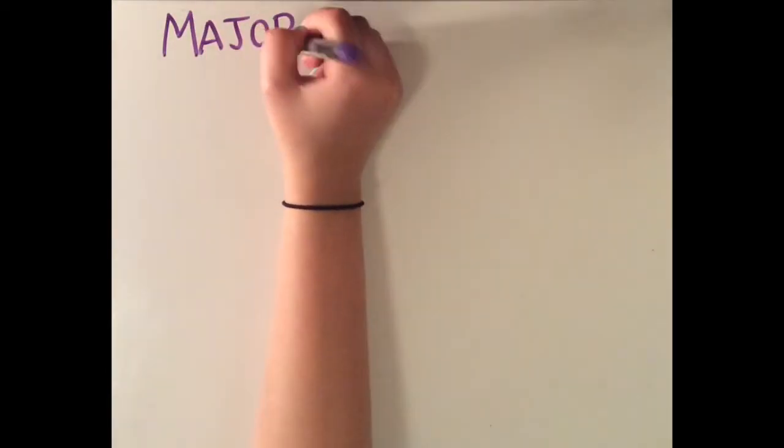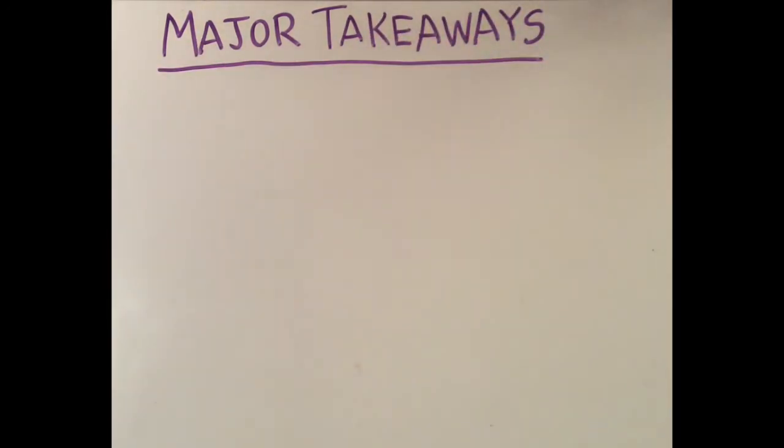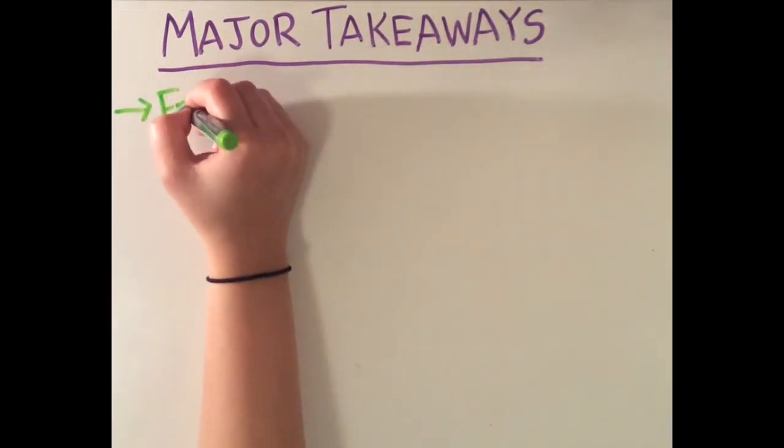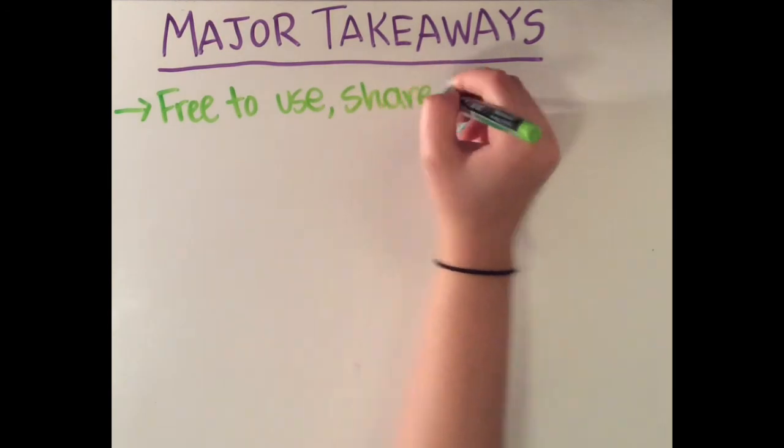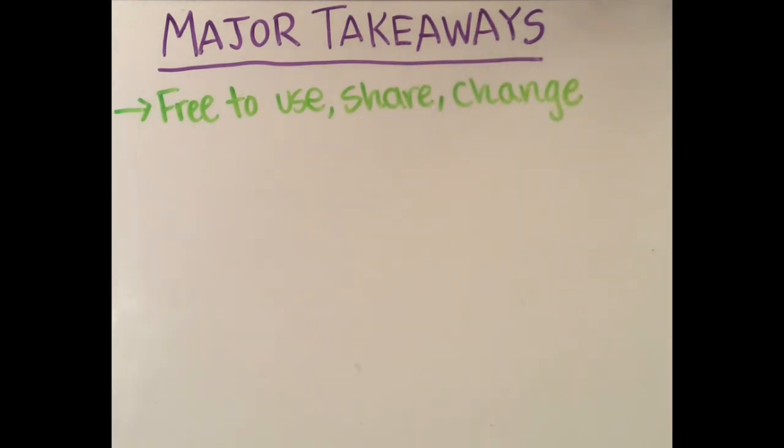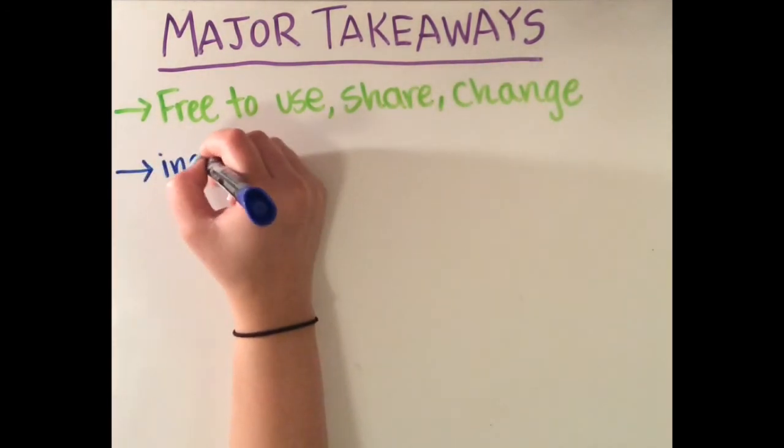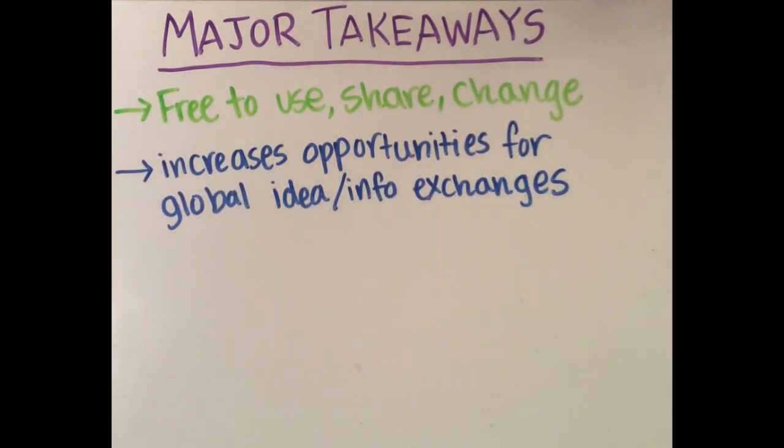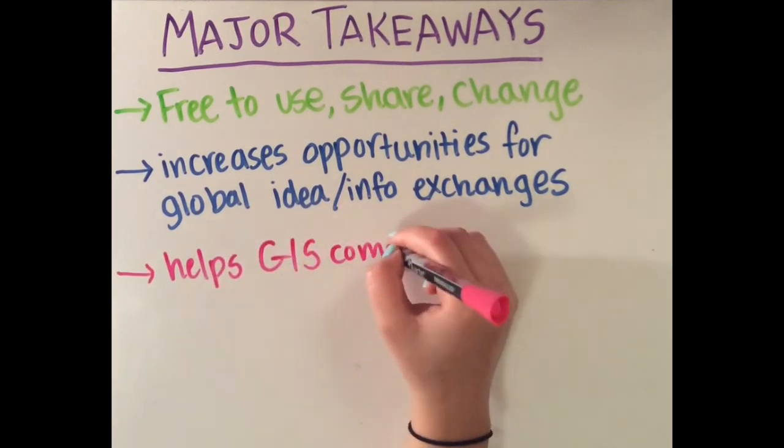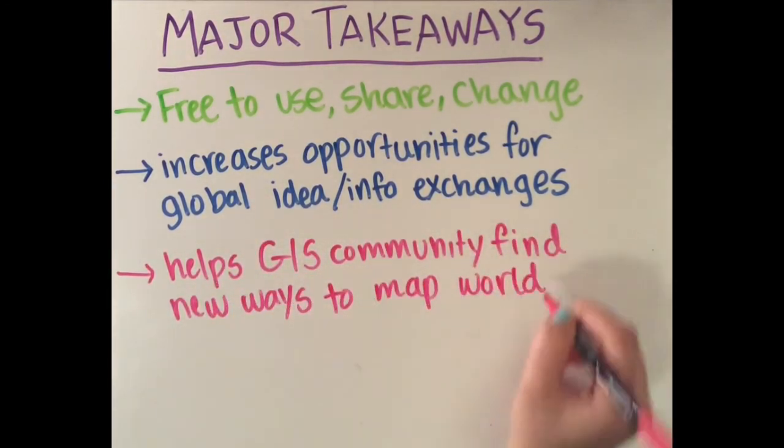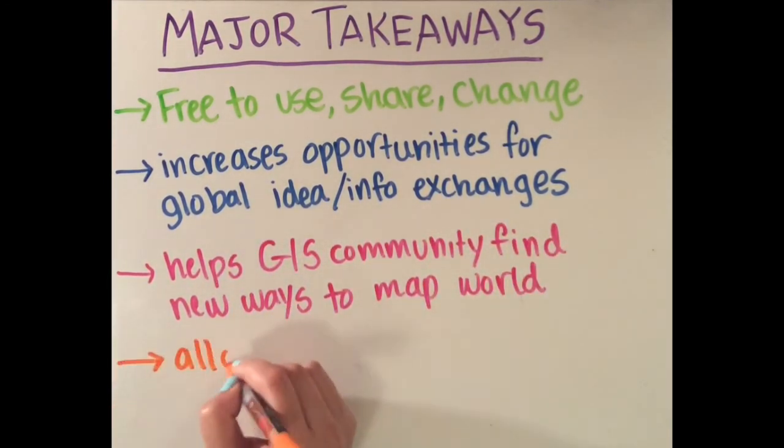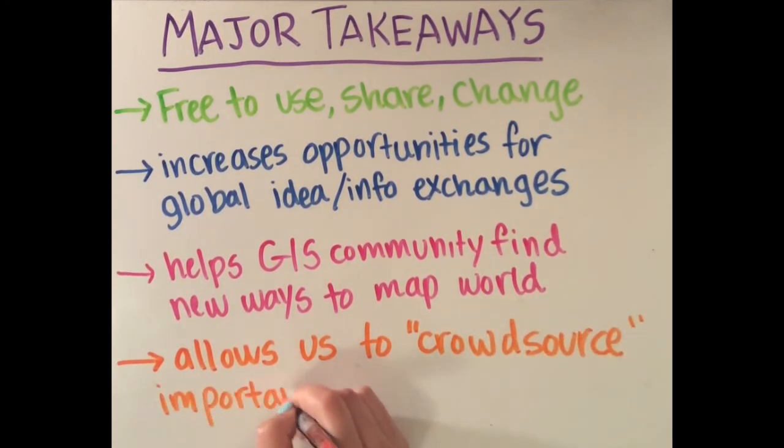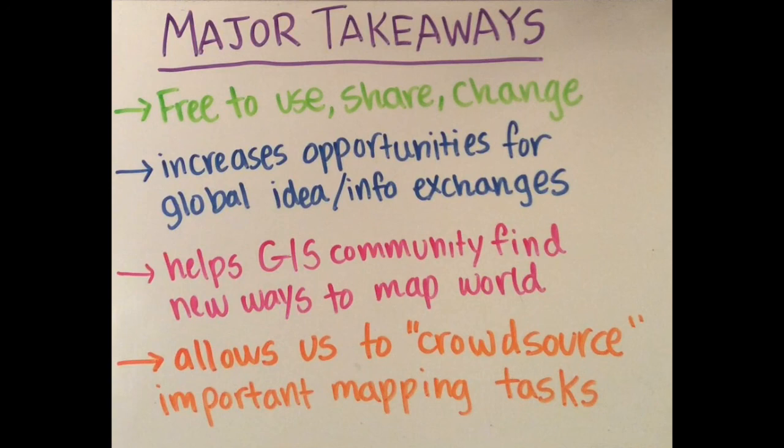In conclusion, open source technologies are softwares that can be used, shared, or changed freely by any user. They increase the flow of ideas and information around the world and help people find new ways to exchange important information with each other. And finally, open source technologies have helped users find new ways to map the world and to crowdsource important projects to allow mappers from around the world to help solve specific problems.